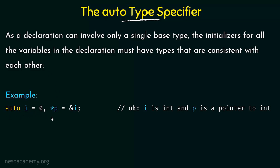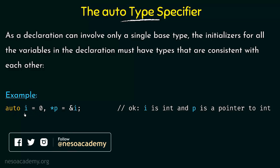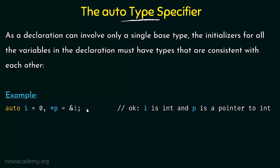Here we say auto i=0 and *p=&i. The compiler sees that i equals 0 and deduces it as an integer type. Then p is a pointer to i, which is also an integer, so p is a pointer to an integer. Both i and pointer p are integer types, so the auto keyword can assign integer for both of them. This is a perfectly valid declaration.